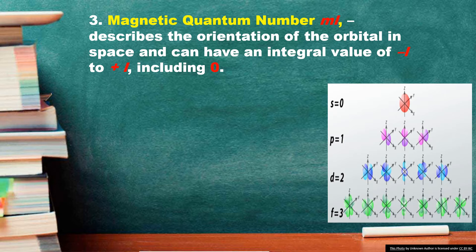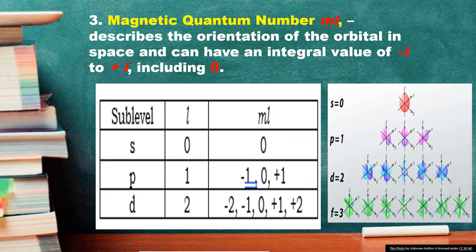The third quantum number is the magnetic quantum number, designated by ML. It describes the orientation of the orbital in space and can have an integral value from negative L to positive L, including 0. So if L is equal to 2, ML is negative 2, negative 1, 0, positive 1, positive 2. It determines how many orbitals there are of a type per energy level, and therefore describes a specific orbital.